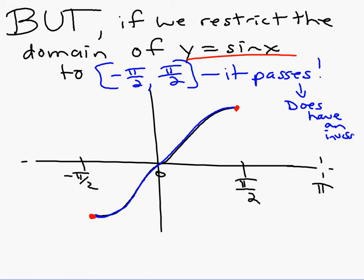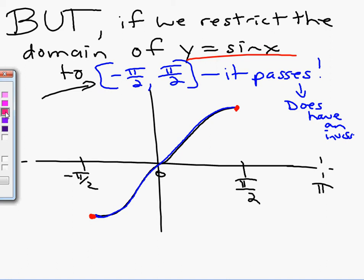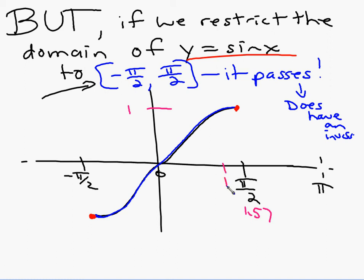Tonight's homework will ask you to graph the restricted domain sketches we just did and then reflect them across the line y equals x. Note that one is about 1.57 when compared to pi halves, so draw your y equals x line carefully so those values meet. Make your best attempt at reflecting the graph, and tomorrow we will summarize this more thoroughly. We'll stop there for today.